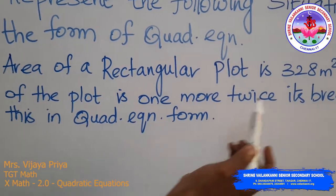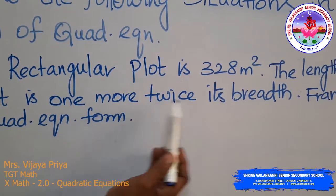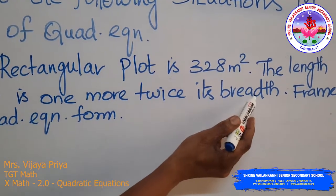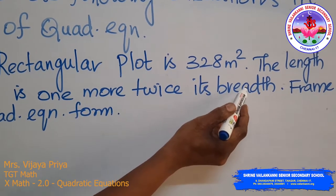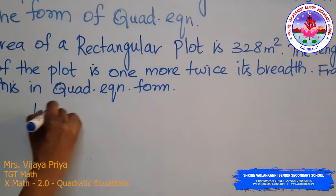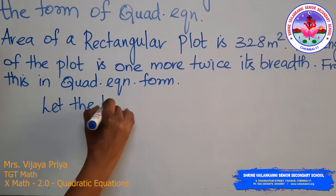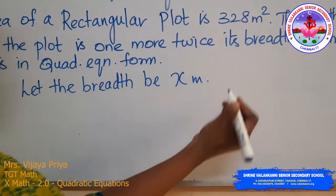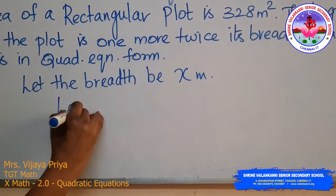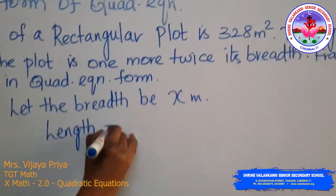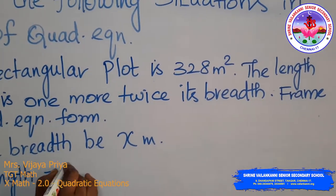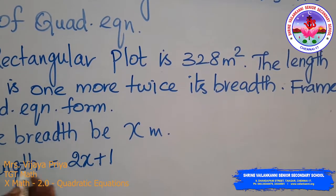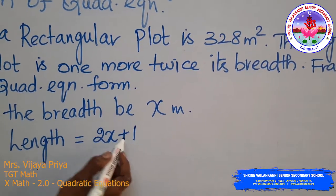The length is given as one more than twice the breadth. Let the breadth be x metres. Then twice the breadth is 2x, and one more than that gives length = 2x + 1.